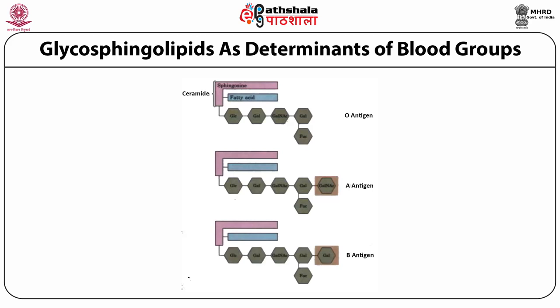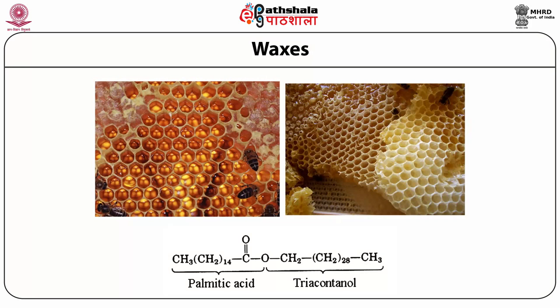Many metabolic disorders relate to the catabolism of gangliosides and other glycosphingolipids. We have already referred to the Tay-Sachs disease in which the concentration of the ganglioside GM2 becomes very high, as a specific beta-N-acetylhexosaminidase which removes N-acetylgalactosamine is deficient. Tay-Sachs disease is usually fatal by the age of 3 years of the infant.